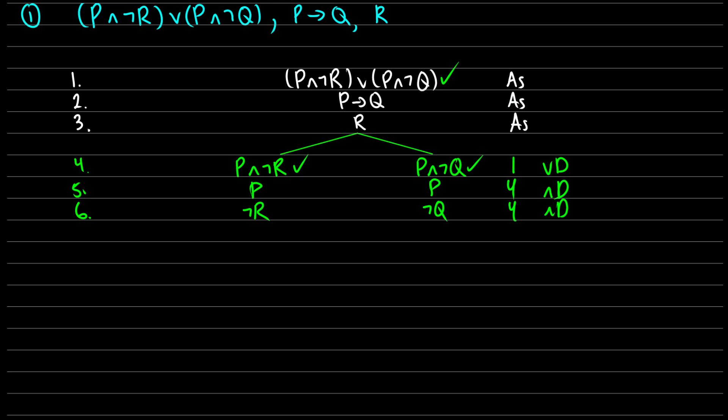And I already find a contradiction — I find R and not R on the left branch. So this means the left branch will close; it's impossible for R and not R to be true at the same time. So now all we have to deal with is not Q, and all that's left is to deal with the well-formed formula in line two.